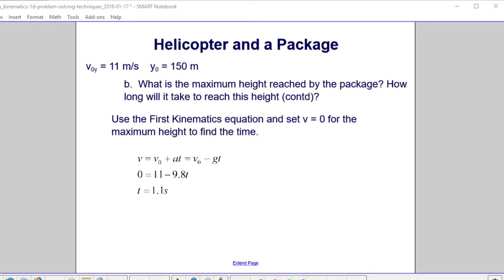We now want to find out how long it took to reach that height. Let's go to the first kinematics equation. And again, our final velocity will be 0 because your maximum height is where you momentarily stop moving in the up direction and you now start heading down. So that will be v0 plus at. a is minus g. We plug in our numbers here and it takes 1.1 seconds. So the package keeps rising for another 1.1 second after it's dropped out of the helicopter.